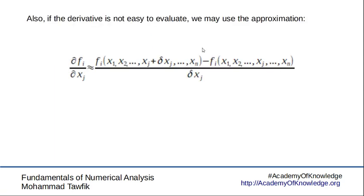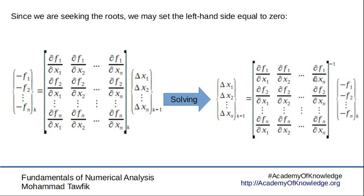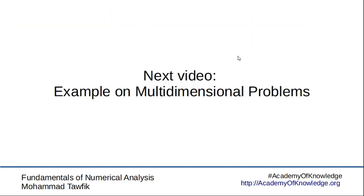We can also modify the method: instead of using analytical derivatives, we can approximate the derivative by introducing a small change in the j-th variable. This brings us back to the Jacobian matrix, where we replace the exact derivative with a numerical finite-difference approximation. This is useful in most practical cases where you don't have an explicit function for the derivative. We will demonstrate that in another program.